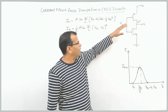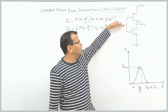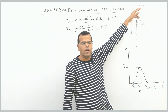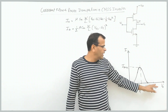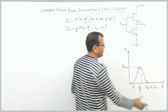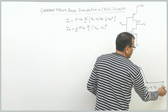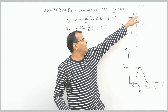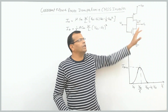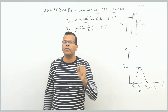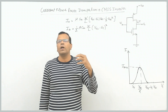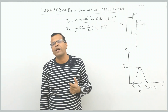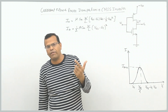We know when you vary the input voltage from 0 to VDD level, the devices will be operating in different regions of operation. If you remember the voltage transfer characteristics of CMOS, you can refer to my previous video.